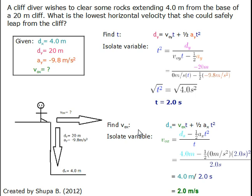Now that we have our time, we can find our initial horizontal velocity by using the horizontal components of the equation dx equals vox times t plus one half times ax times t squared.